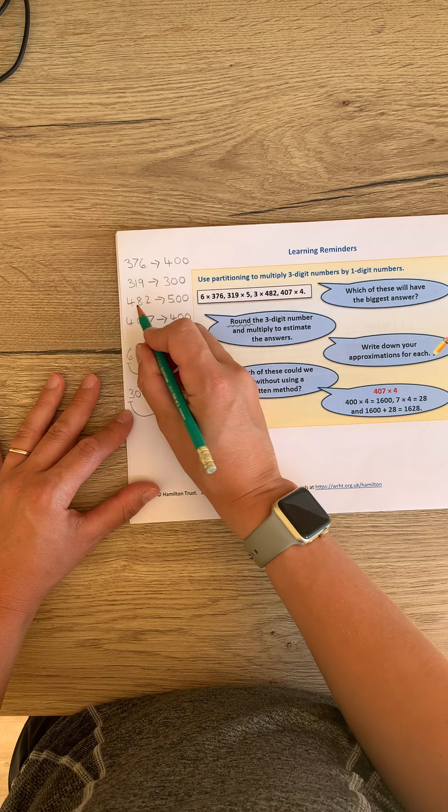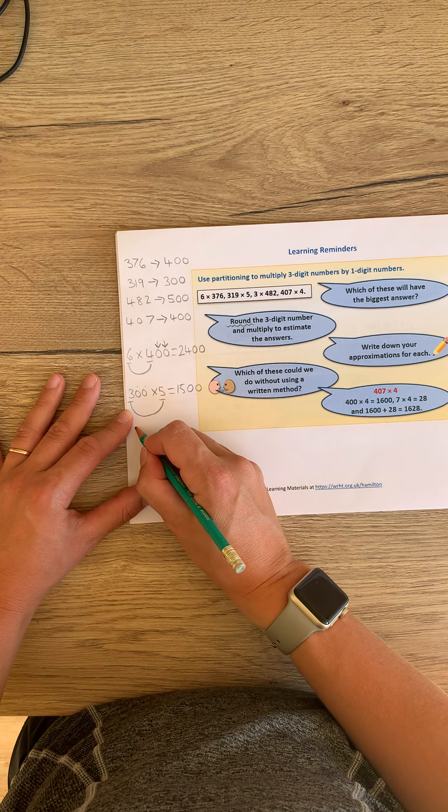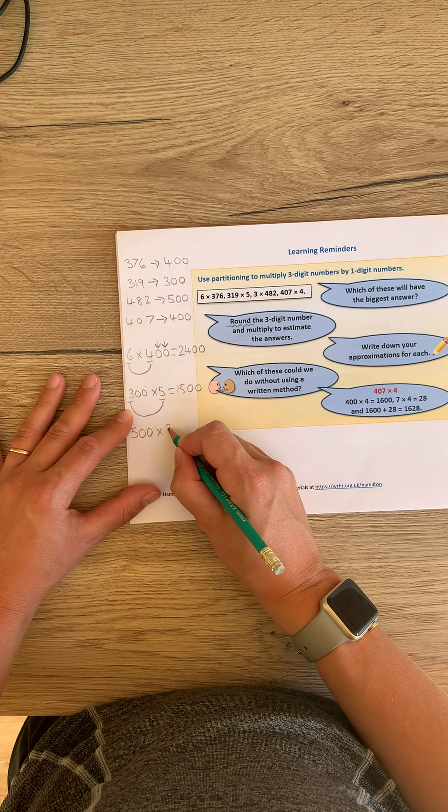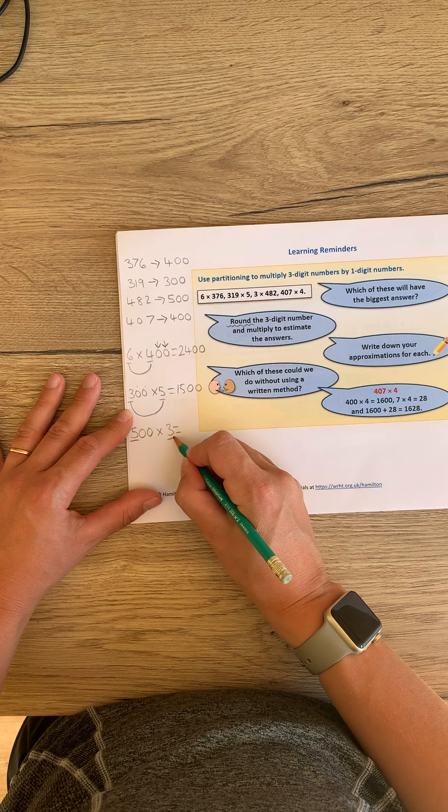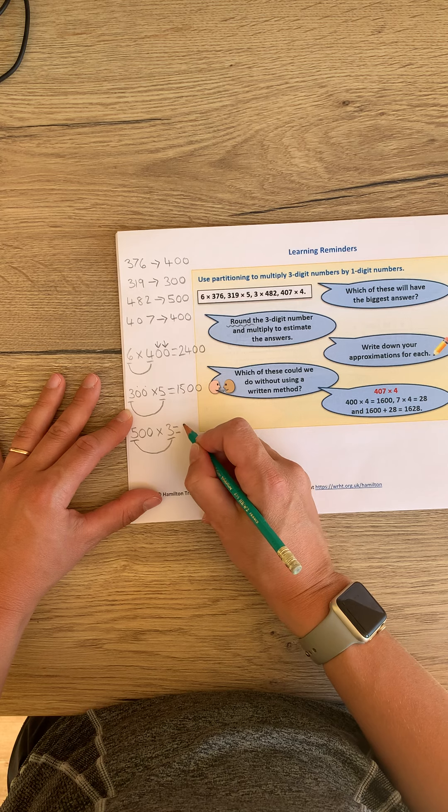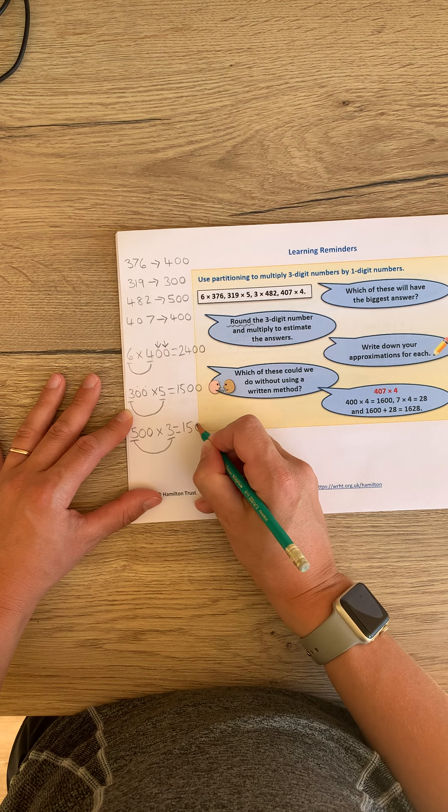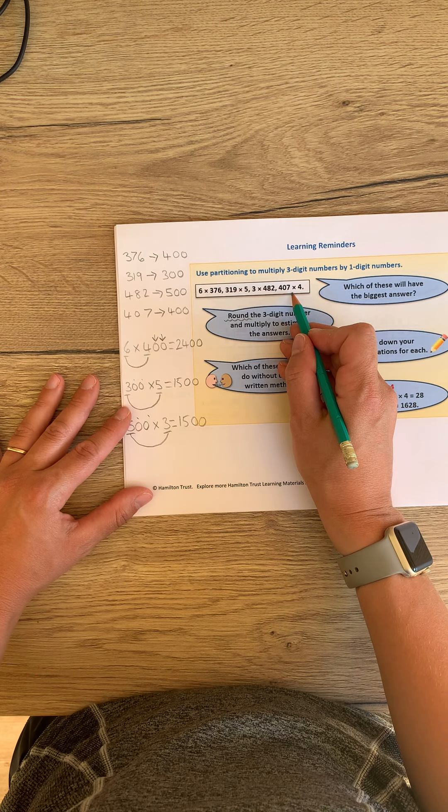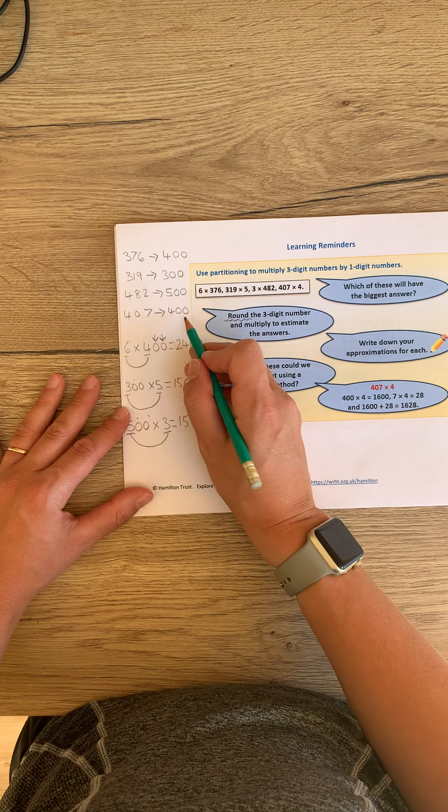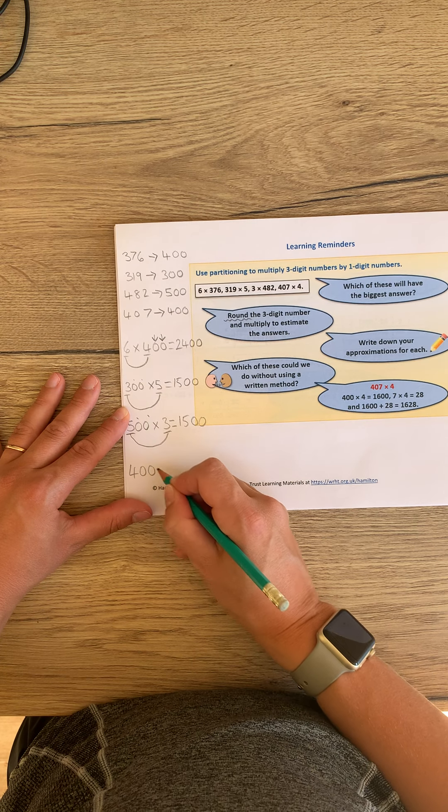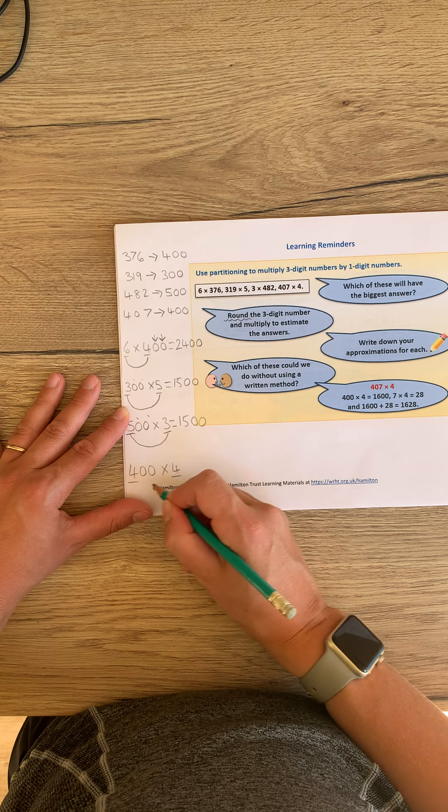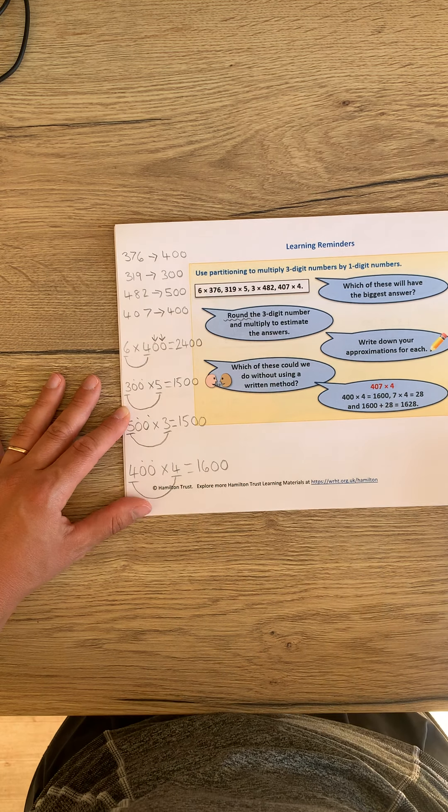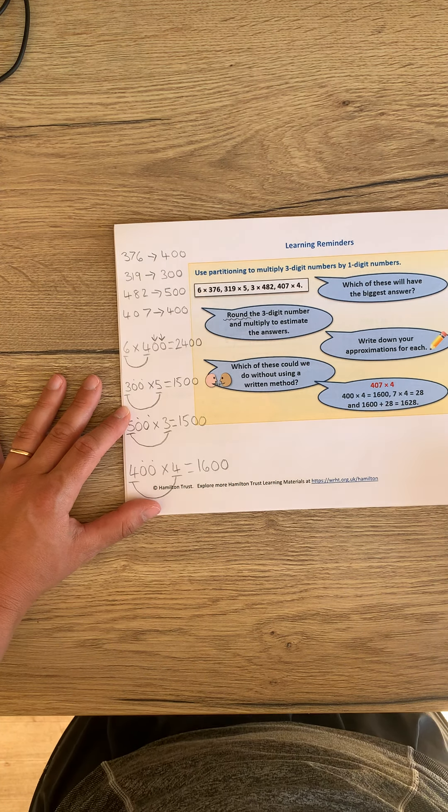3 multiplied by 482. And we've rounded that to 500. So 500 multiplied by 3. We've just done 3 times 5. This is the other way round, still going to generate the same answer. 1500 there, with our place value holders. And finally, 407 multiplied by 4. But it's 400 multiplied by 4. 4 multiplied by 4 is 16, two place value holders multiplies by 100, which gives us the answer of 1600.